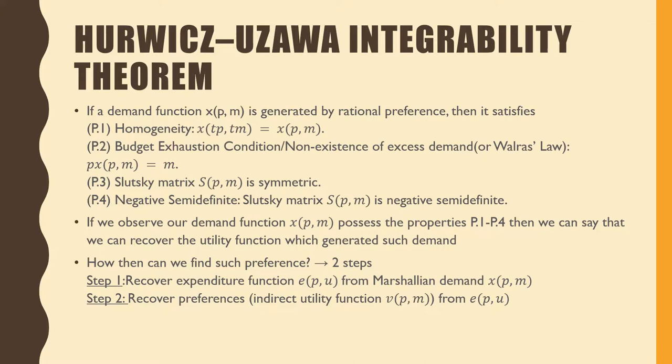The Hurwicz-Uzawa Integrability Theorem states that if the demand function x(p,m), which is our Marshallian demand, is generated by rational preferences, then it satisfies the following four conditions. The first one is homogeneity, the budget exhaustion condition or Walras' law, its Slutsky matrix is symmetric, and its Slutsky matrix is negative semi-definite. If we observe that our Marshallian demand possesses these properties from one to four, then we can say that we can recover the utility function which generated such demand.